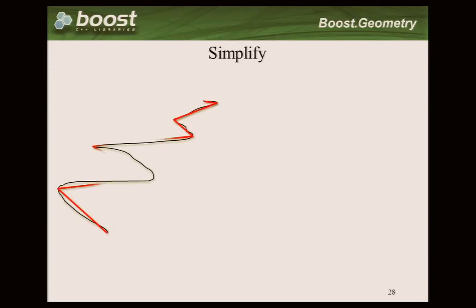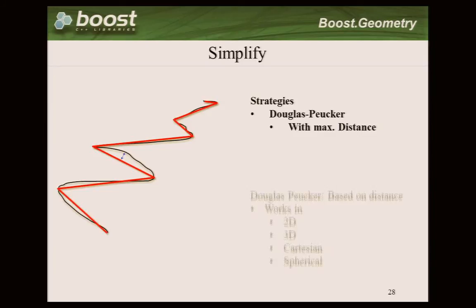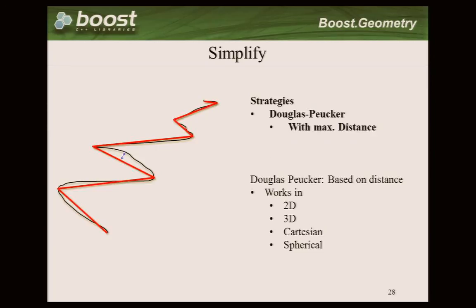Simplify - this is not an OGC algorithm, but we support it using Douglas-Peuker. It makes a complex form simpler. You specify a maximum distance, for example this distance, and the line which originally had 500 points has after that about 10 points. We can also specify strategies - for example not the distance but the maximum number of points.